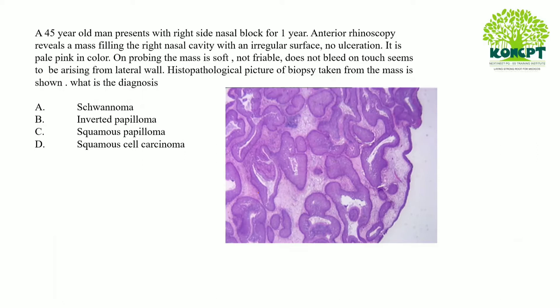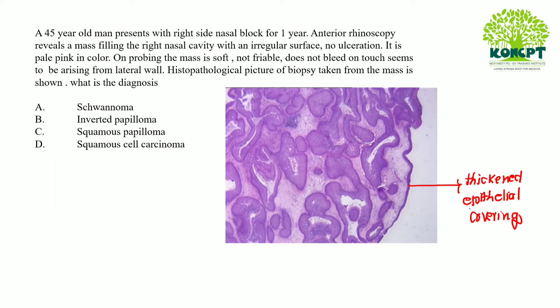An image is given showing the histopathological picture. This lesion has a thickened epithelial covering. Another characteristic feature is this hyperplastic epithelium showing extensive invasion into the underlying stroma rather than growing in an exophytic manner. This characteristic feature of invasion into the underlying stroma is the hallmark of inverted papilloma.